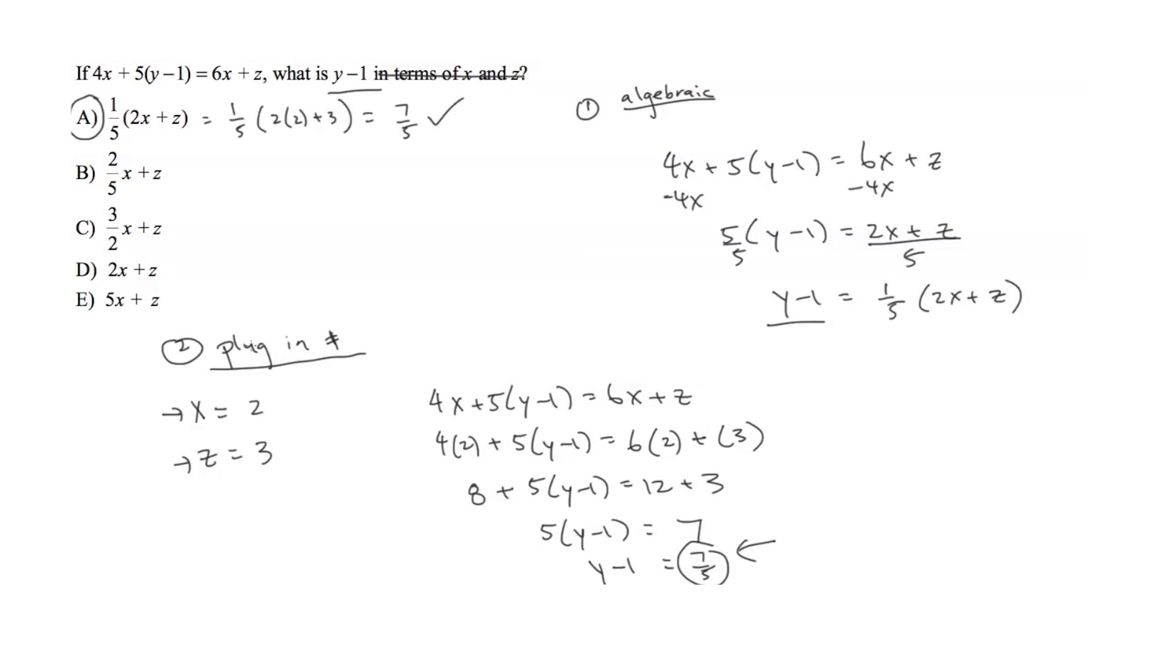Now one thing you have to remember for plugging in your own number, and this is only when you use this strategy. Even if this answer turns out to be 7 over 5, make sure you check A through E because there are chances or there are potential ways for you to choose values for x and z such that more than one of these answers would be correct.